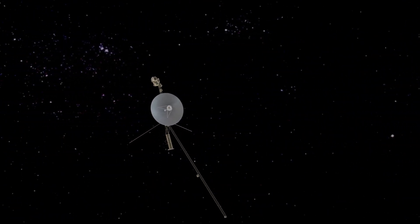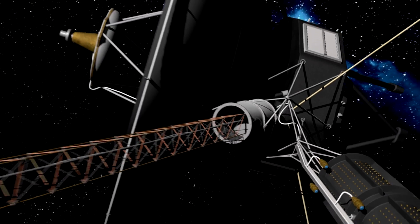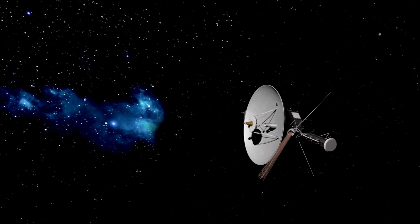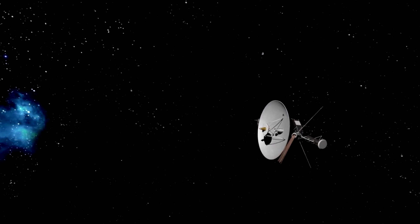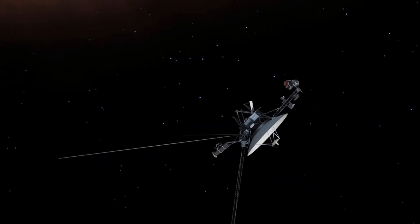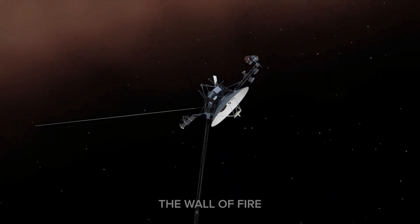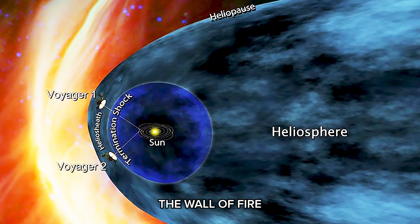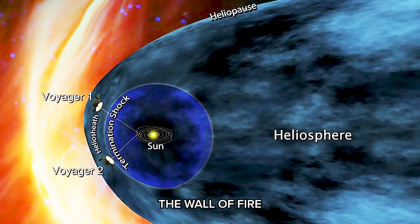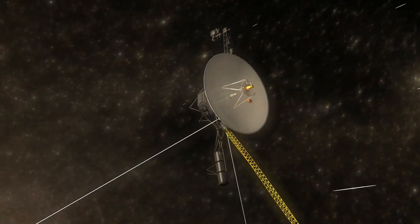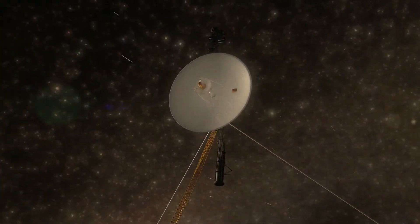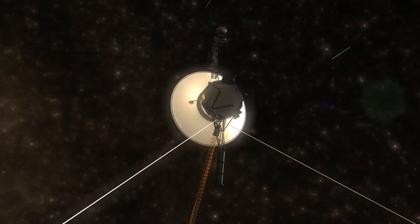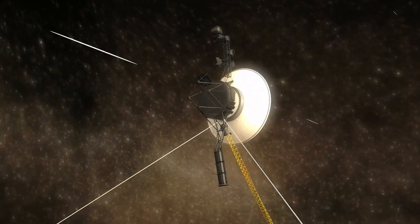Voyager 1 was launched on September 5th, 1977, and for almost 50 years it has continued its endless lonely journey into the great unknown beyond our solar system. And now, it has passed through a region once nicknamed the Wall of Fire. The name sounds more like something out of science fiction, but the phenomenon is real, and Voyager's passage through this intense and mysterious region has uncovered some of the most remarkable discoveries ever made at the edge of our solar system.